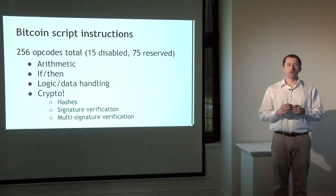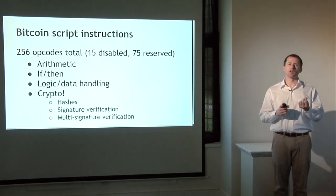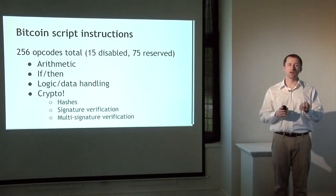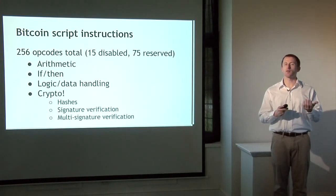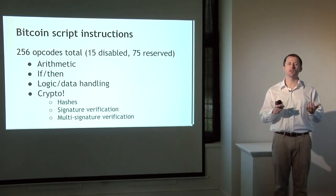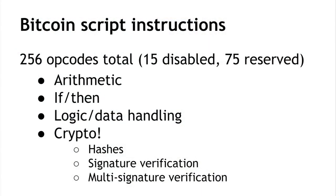The Bitcoin scripting language is very small — there's room for only 256 instructions since each is given one byte. Of those, 15 are currently disabled and 75 are reserved for future use. The available instructions include basic arithmetic, basic logic like if/then, and instructions for throwing errors or returning early. There are also crypto instructions: hash functions, signature verification, and a special important instruction for multi-signature verification called OP_CHECKMULTISIG. This lets you check multiple signatures with one instruction — you specify n public keys and a threshold t, and at least t out of n must be valid.